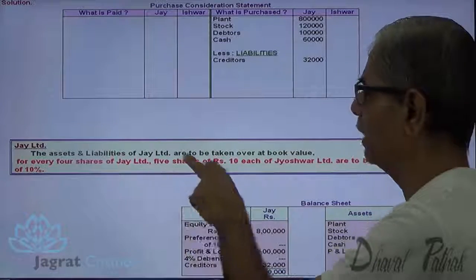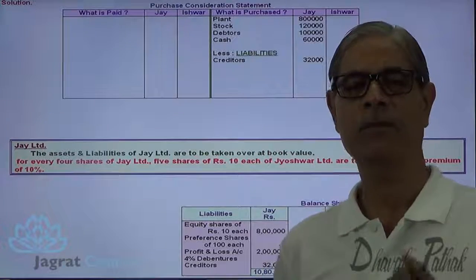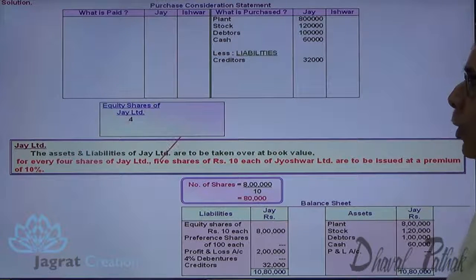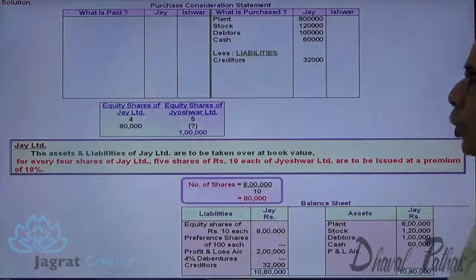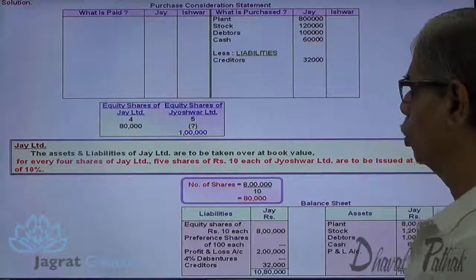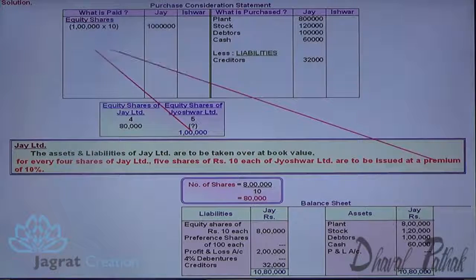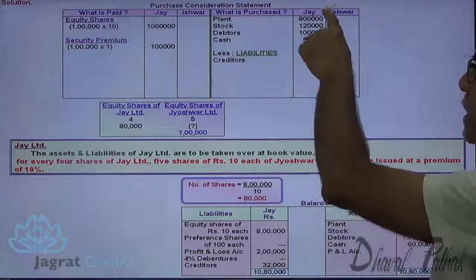For every 4 shares in Jai Limited, 5 shares of rupees 10 each of Jai Ishwar Limited are to be issued at a premium of 10%. For 4 shares, 5 shares are to be given. First, find out how many shares are there in Jai Limited: 8 lakhs divided by 10 gives 80,000 shares. As per the exchange ratio, for 4 shares in Jai Limited, 5 shares of Jai Ishwar Limited are to be given. So 80,000 into 5 divided by 4 gives 1 lakh shares. 1 lakh shares are given at a premium of 10%, so 1 lakh into 10 plus security premium of 1 rupee per share equals 11 lakhs to be paid.